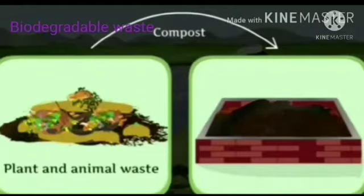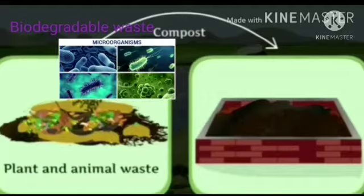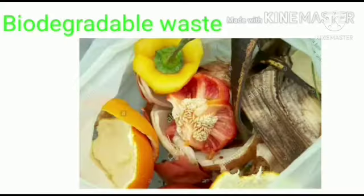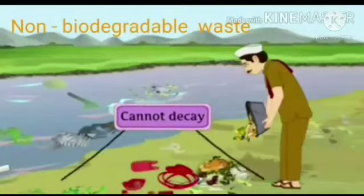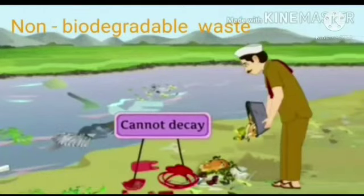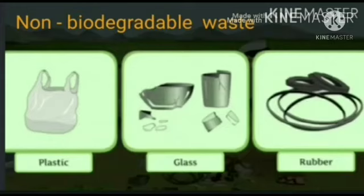Waste which can be decomposed or broken down by microorganisms is called biodegradable waste. Examples are vegetable and fruit peels. Waste that cannot decay by biological processes is called non-biodegradable waste. Some examples are plastic, glass and rubber.